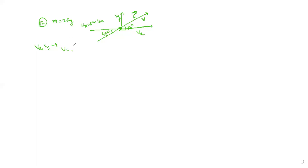V is equal to root of Vx squared plus Vy squared. If we know Vx and Vy, we can find the resultant velocity V. V equals root of Vx squared plus Vy squared — those are the two perpendicular components.